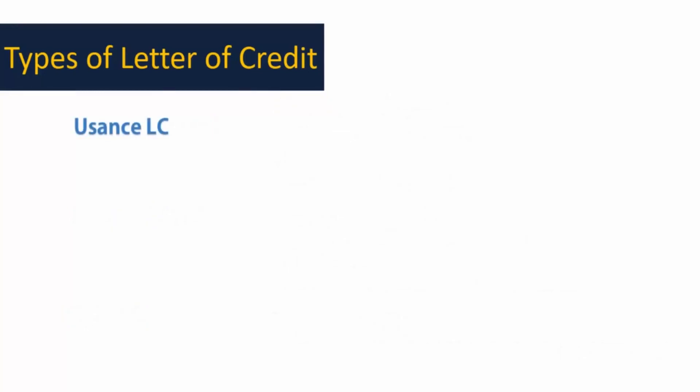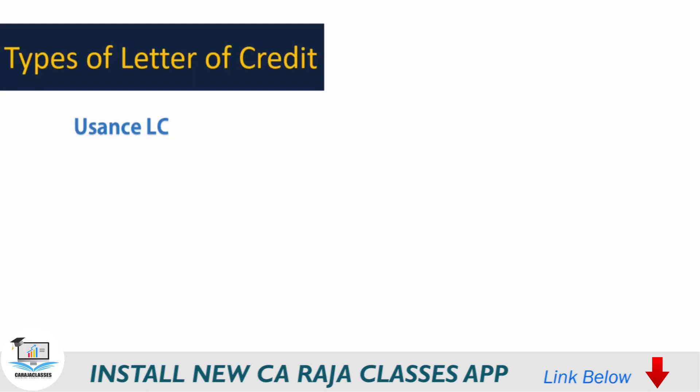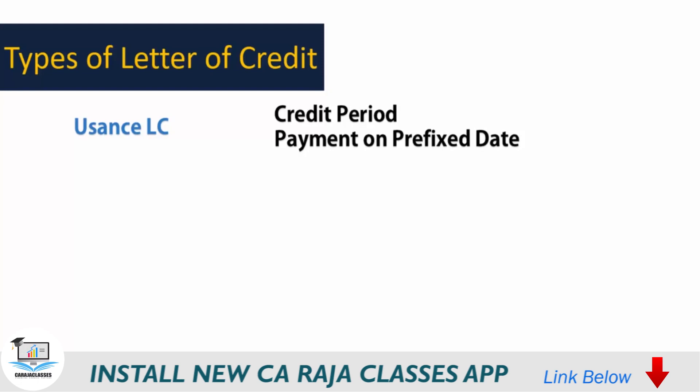Then there is something known as usance LC, where the seller is permitting a certain credit period to the buyer. The buyer would open the LC, it would reach the seller, the seller would showcase the documents, and the payment to the seller would happen only after the usance period plus a grace period of seven plus seven plus seven days. So a credit period is offered by the seller and payment is going to happen on a pre-fixed date.